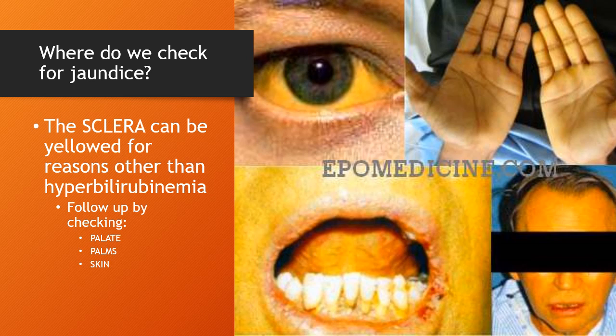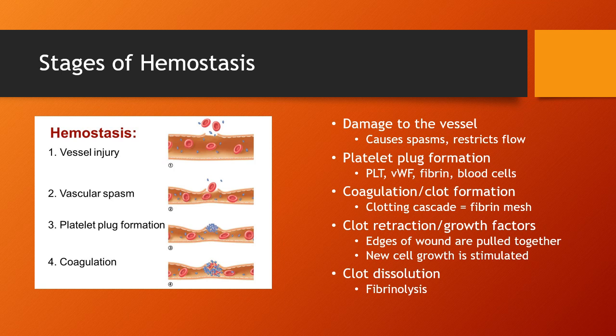Oftentimes we'll see jaundice first in the sclera. If you look in the eyes of your patient and notice the sclera is yellow, you need to confirm — especially in somebody who has darkly pigmented skin — that this is a jaundice issue and not just a normal variation. You confirm that by checking in the palate of the mouth and under the tongue, the palms of the hands, and overall skin color.